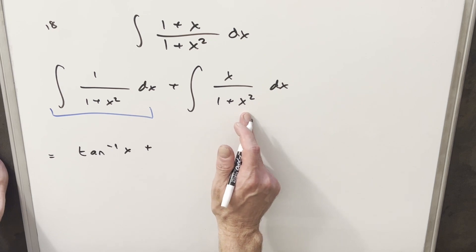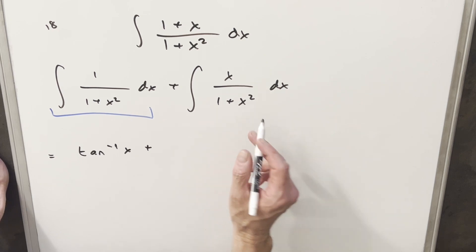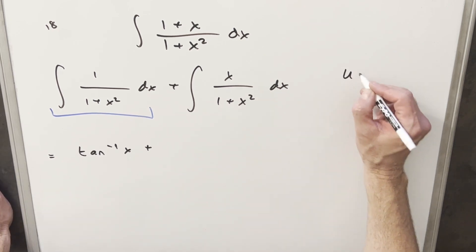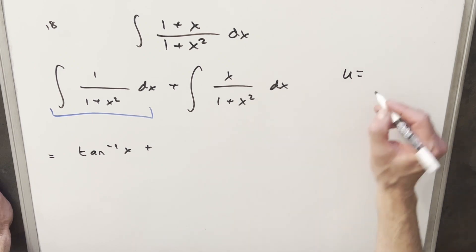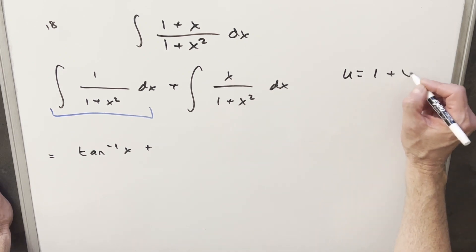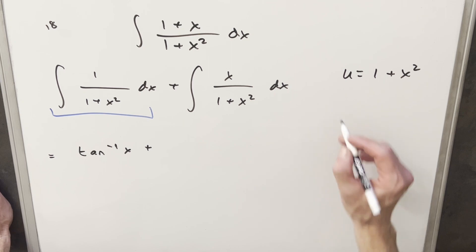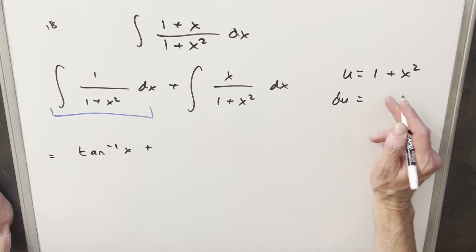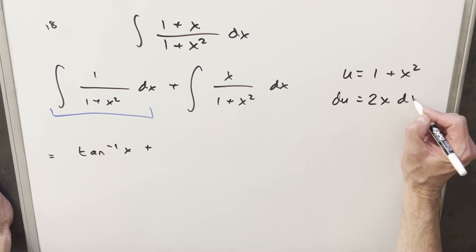And then here for our second integral, this is not too bad either, because what I can do here is a u-substitution. So we're going to make my u the whole denominator. So we'll say u equals 1 plus x squared. Take a derivative, and du is going to be derivative of 1, 0. Derivative here is going to be 2x dx.